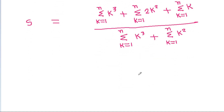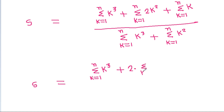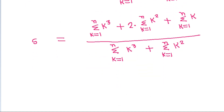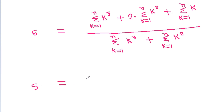So S equals summation from k=1 to n of k cubed, plus 2 times summation from k=1 to n of k squared, plus summation from k=1 to n of k, divided by summation from k=1 to n of k cubed plus summation from k=1 to n of k squared. Since 2 is constant, we can take it outside the summation.